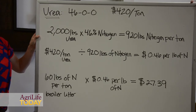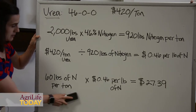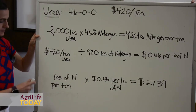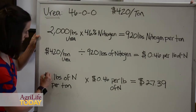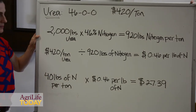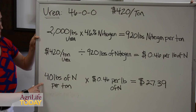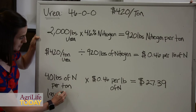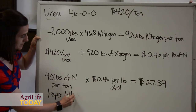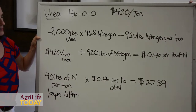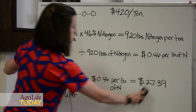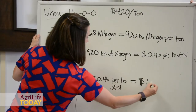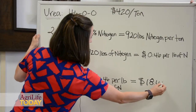If we wanted to determine the value of the nitrogen found in layer litter, this number would change. On average, there's about 40 pounds of nitrogen in layer litter. So we take the 40 pounds of nitrogen per ton of layer litter, multiply that by $0.46 per pound of nitrogen, and our value would end up being $18.40.